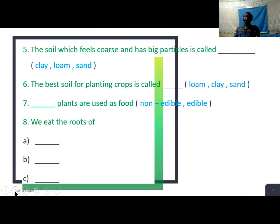Question 6. The best soil for planting crops - is it loam, clay, or sand? You pick one correct answer. Question 7. Plants are used as food - non-edible or edible? When we talk about edible, these are things you can eat. Non-edible things you cannot eat or consume.